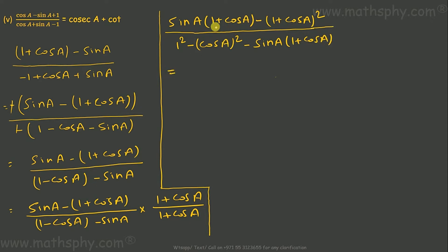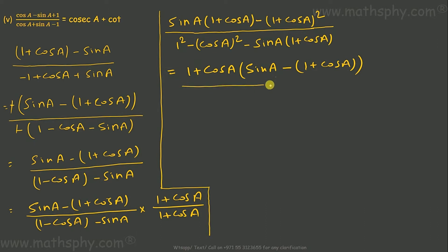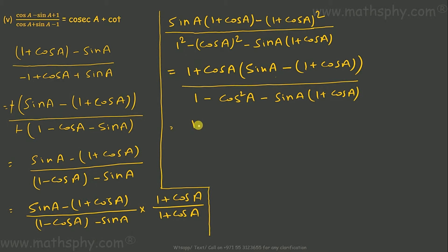Now can I take (1 plus cos a) as common? Taking (1 plus cos a) common, this gives me sin a minus 1 plus cos a. Here this would be 1 minus cos a. Here this would be 1 minus cos squared a minus sin a, all over (1 plus cos a). This is sin a minus 1 plus cos a.